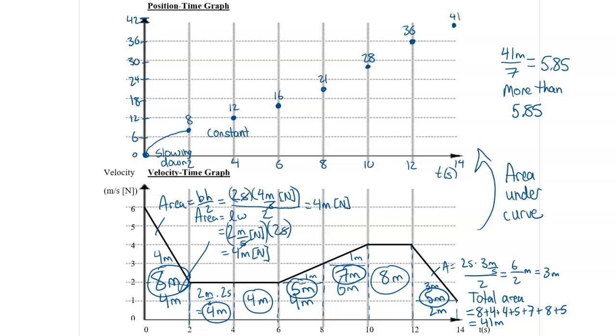Then we have this segment from two to six seconds where the velocity is constant velocity. On a position-time graph, that means it is a straight line from two to six seconds and from eight meters to sixteen meters.